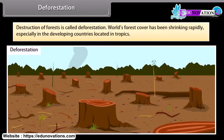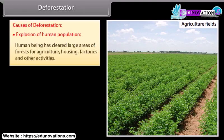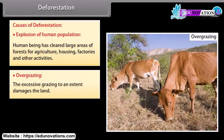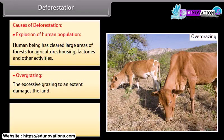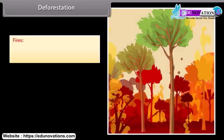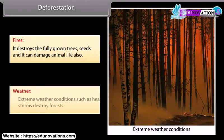Destruction of forests is called deforestation. World's forest cover has been shrinking rapidly, especially in developing countries located in tropics. Causes of deforestation include: explosion of human population, as humans have cleared large areas of forests for agriculture, housing, factories, and other activities; overgrazing, which damages land excessively; pests and insects that destroy trees by eating leaves and spreading diseases; fires that destroy fully grown trees, seeds, and animal life; and extreme weather conditions such as heat and storms.